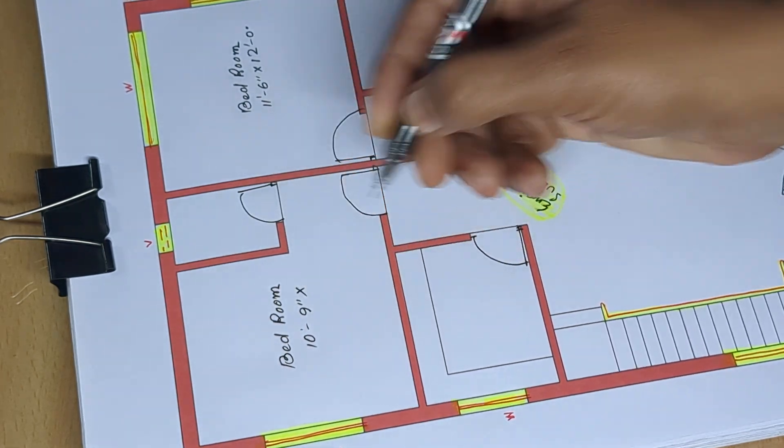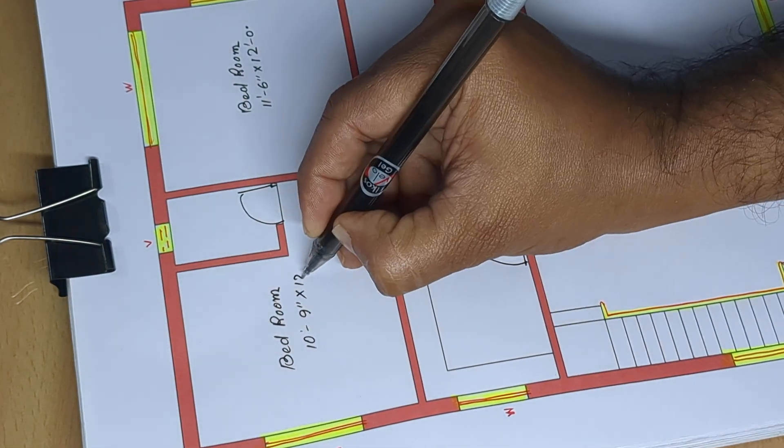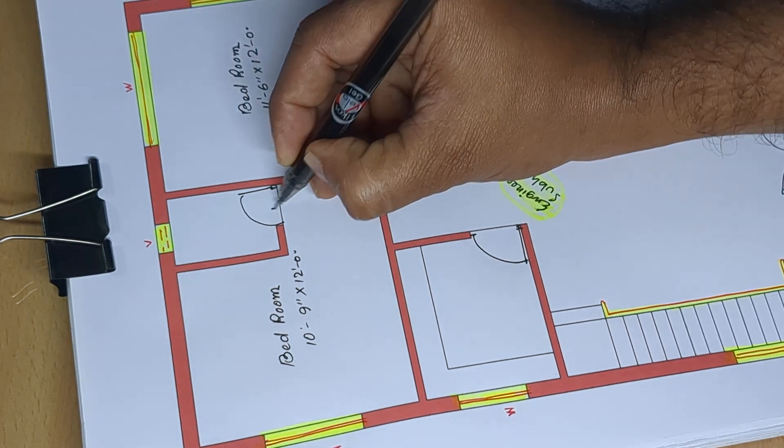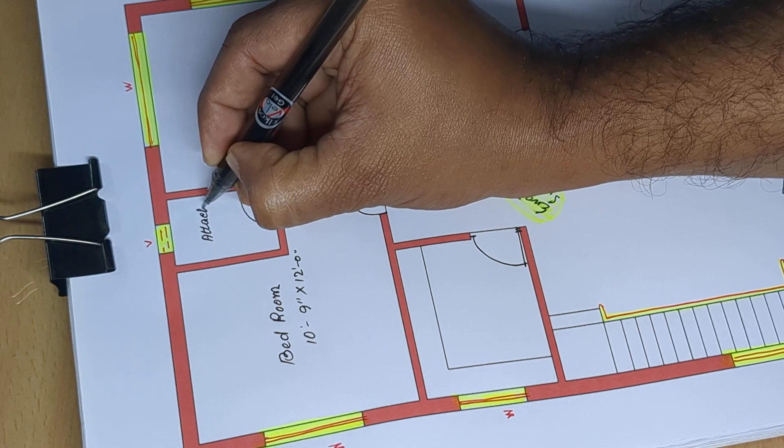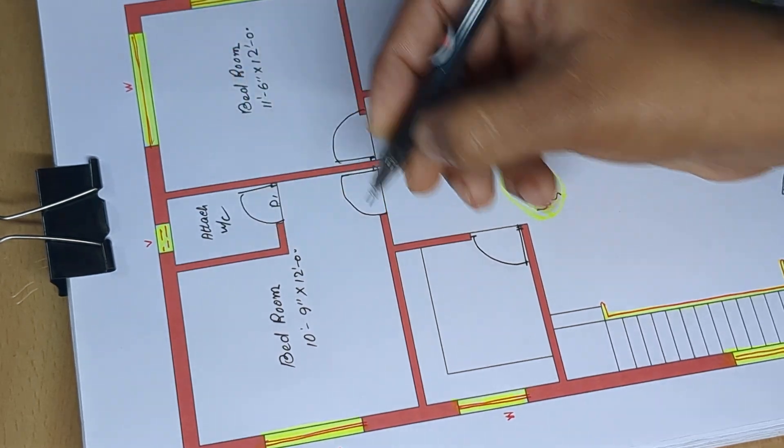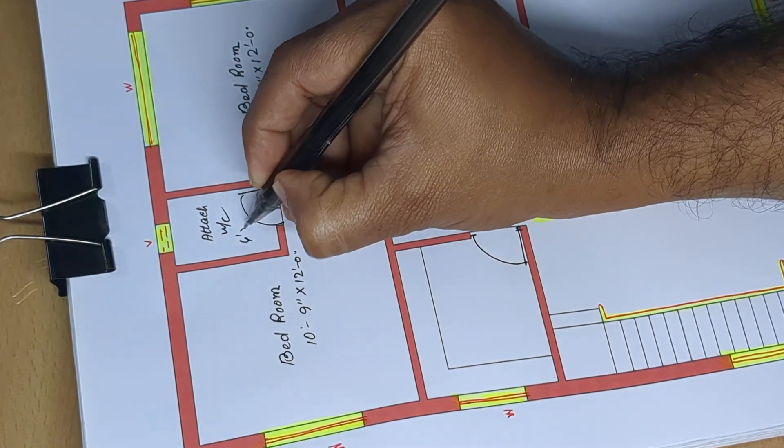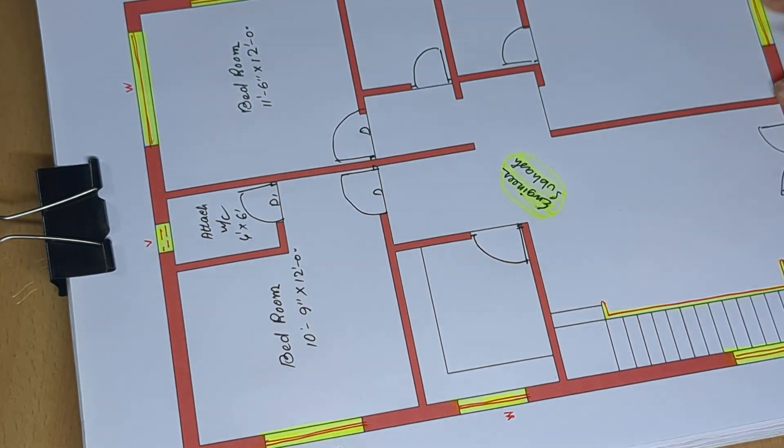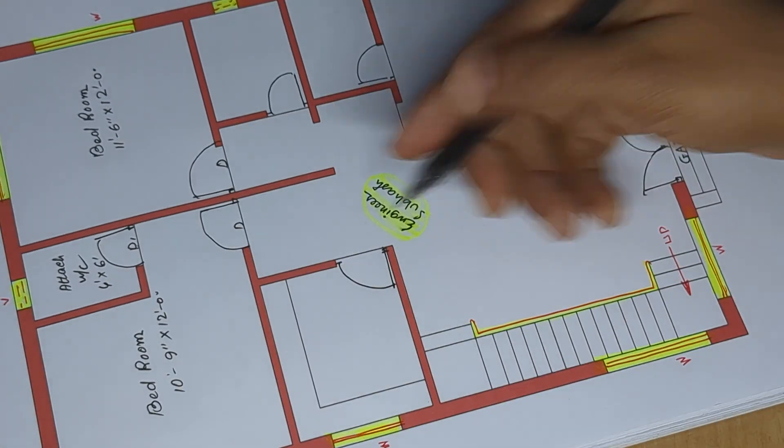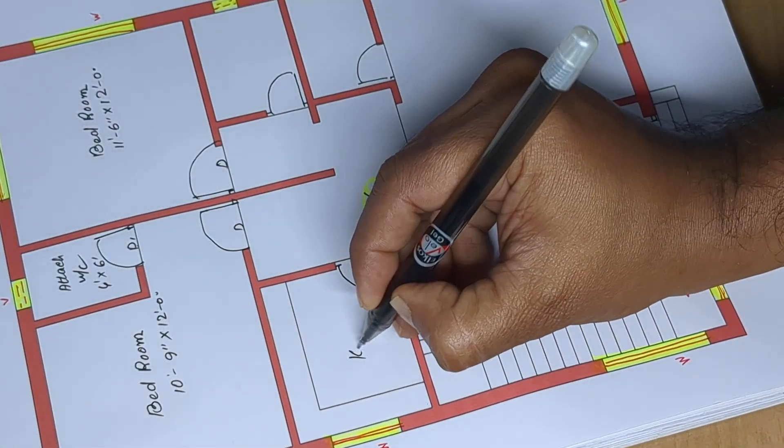Second bedroom: 10 feet 9 inches by 12 feet 0 inches. D1 attached WC, 4 feet by 6 feet, door to bed. Next door each room.